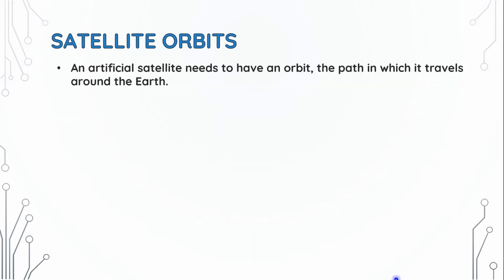Satellite orbits. An artificial satellite needs to have an orbit, the path in which it travels around the Earth. The orbit can be equatorial, inclined, or polar.